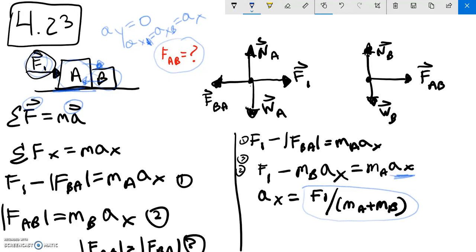So then to get the final variable, which is the force that A puts on B, I go back to equation two.